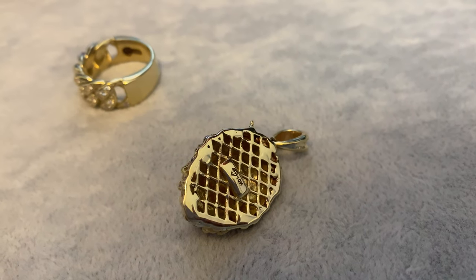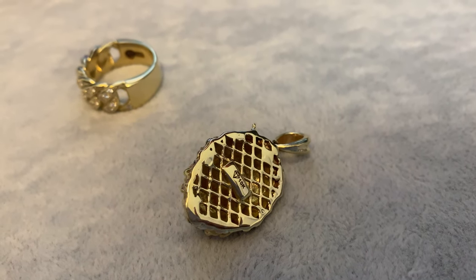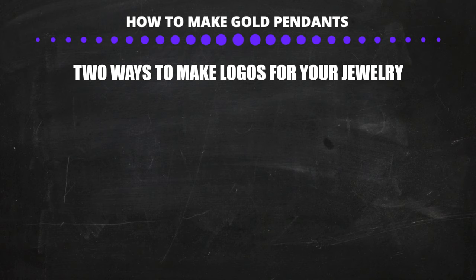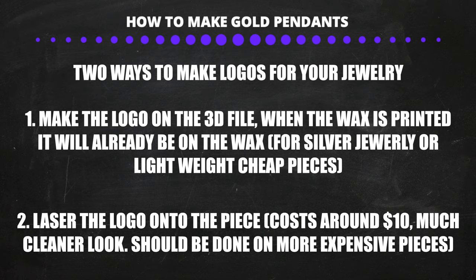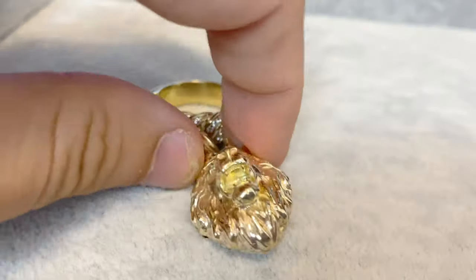The next step is to add a logo to our piece. There are two ways to make a logo. The first way is to have a 3D designer include it in the 3D file, so when the wax is printed the logo is already on there — this is the way to go if you're making silver jewelry or light pieces. The second way is to have it lasered onto the piece, which costs around $10.